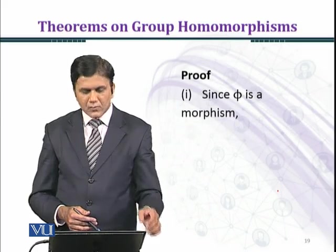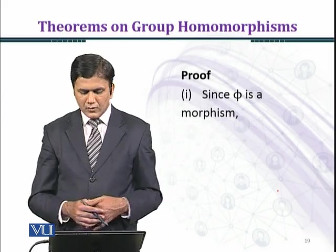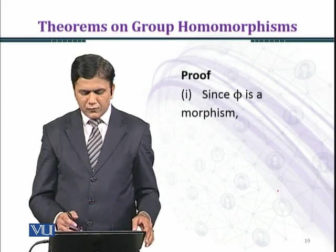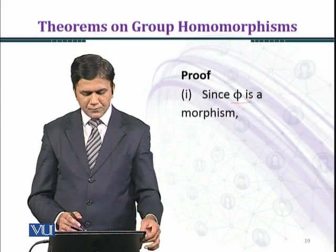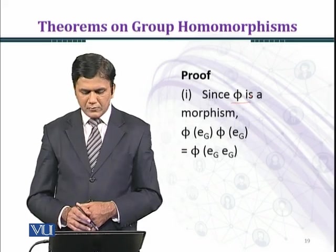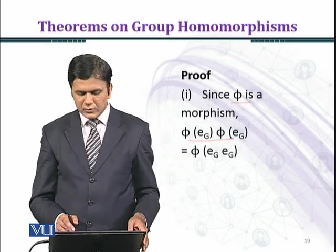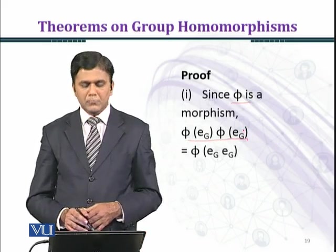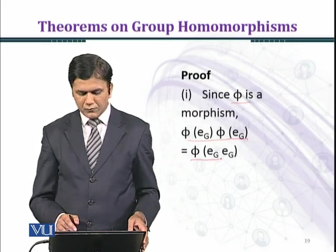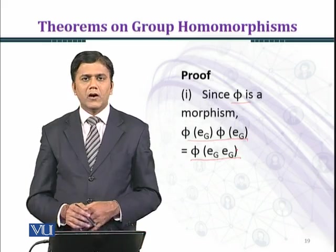Now we prove the result. Since phi is a morphism, we shall get phi(E_G) times phi(E_G) by the property of morphism. Phi(E_G) times E_G.